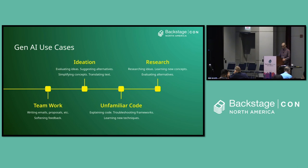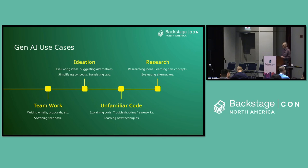Here's some more: what about ideation — coming up with ideas in the first place, evaluating ideas, suggesting alternatives? Research — you can ask AI to pretend to be a particular user type and answer questions in their voice. It can also help with teamwork: 360-degree feedback. I know that when I give feedback, sometimes I'm a little blunt — I'm from the UK, so forgive me. Having AI help me with feedback and soften it is a really useful tool. And it's not just for code — it's also for all the other things you do as part of a team. And lastly, unfamiliar code — I'm a Java developer by trade, but it'd be nice to help out in Python too.